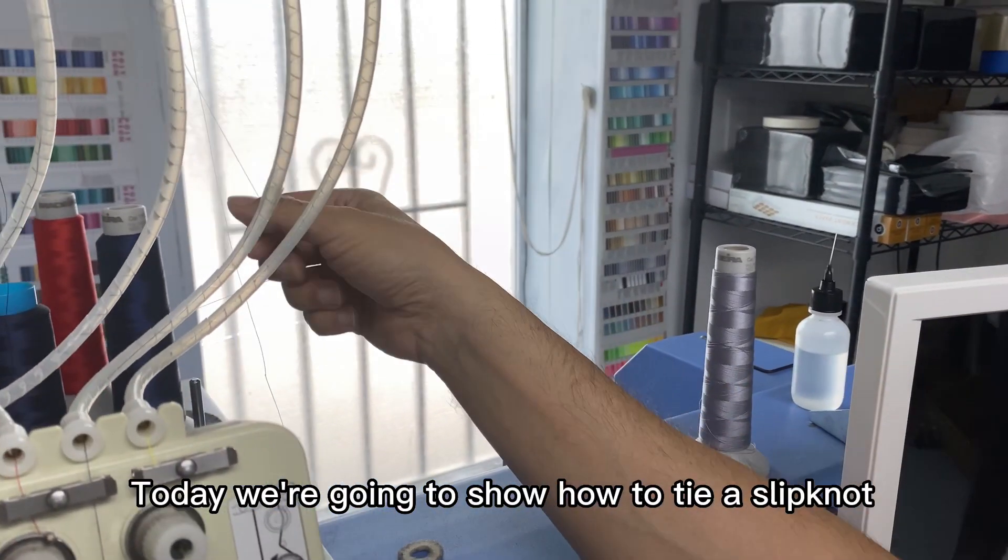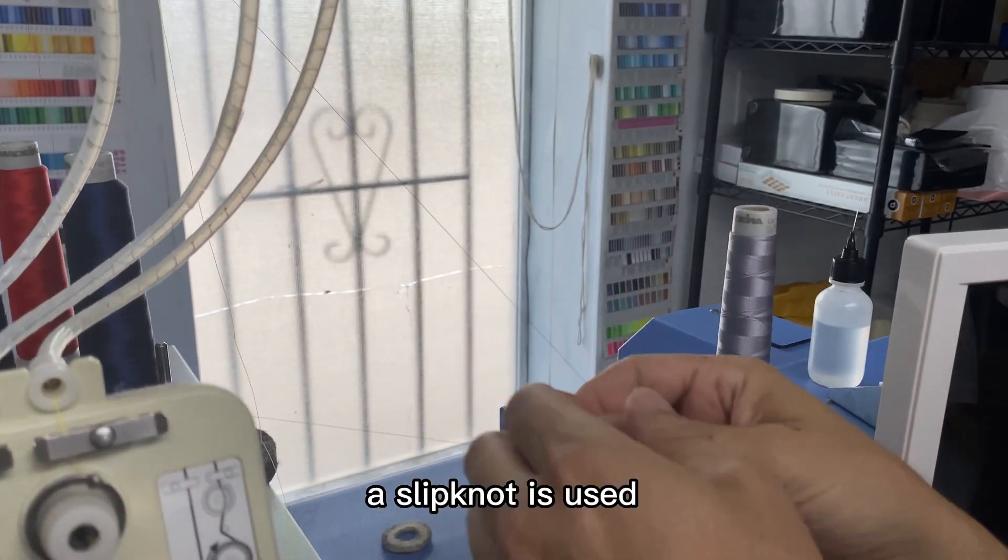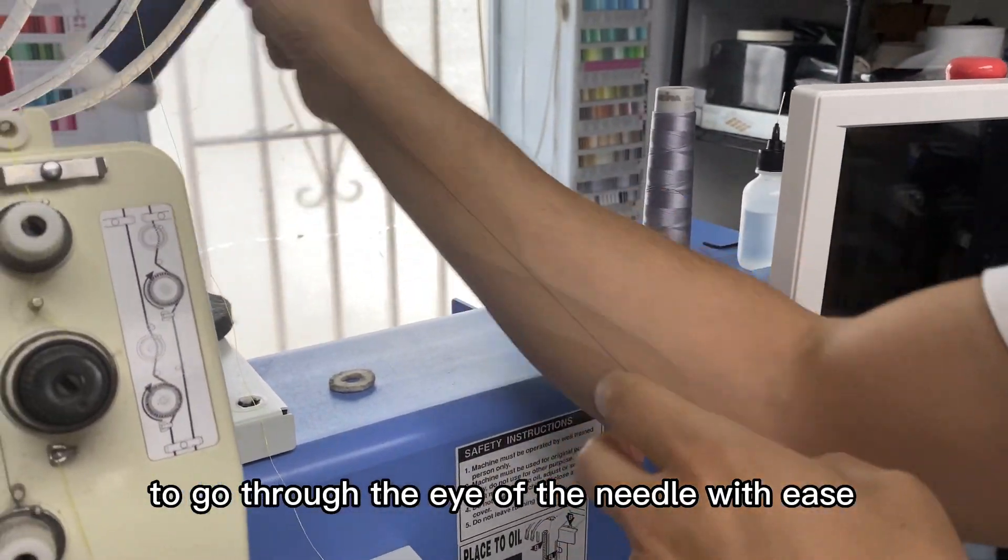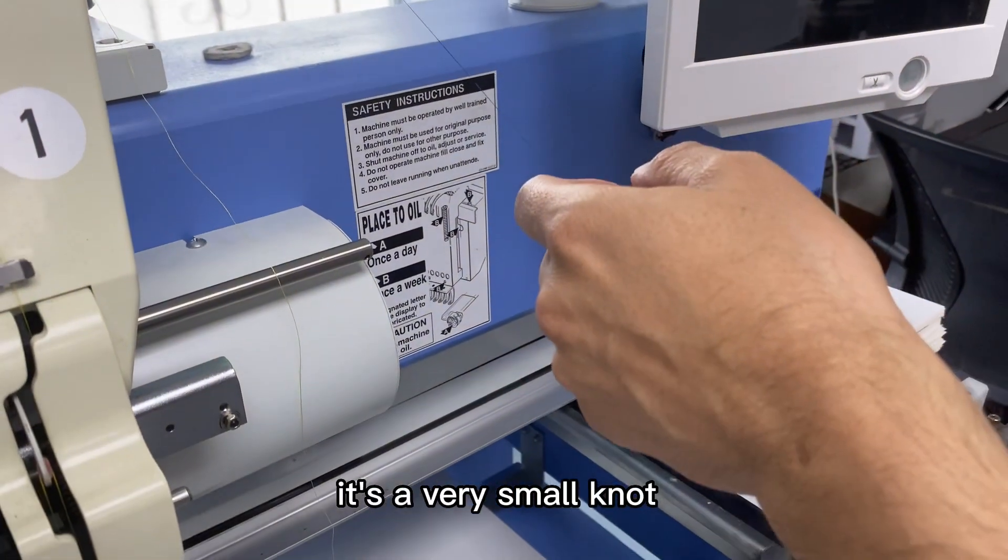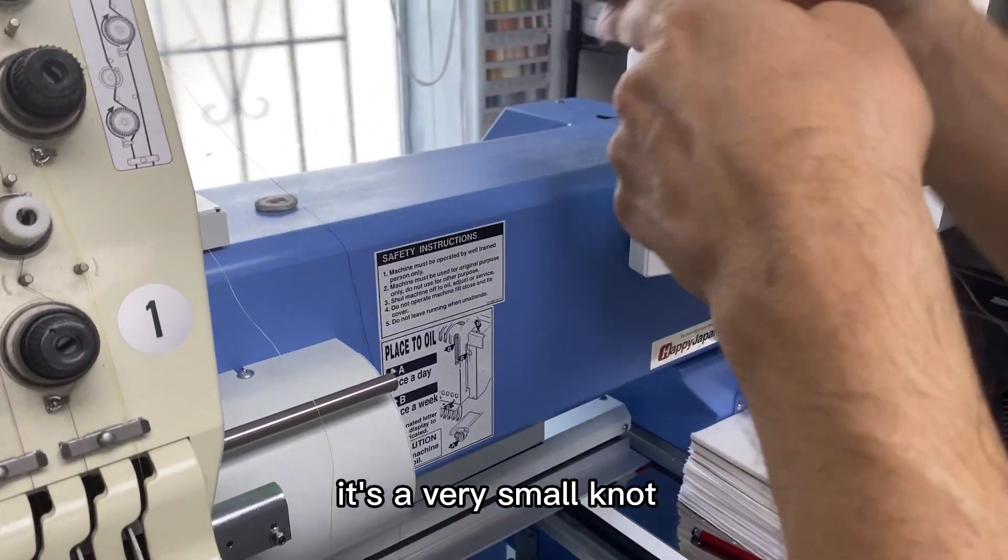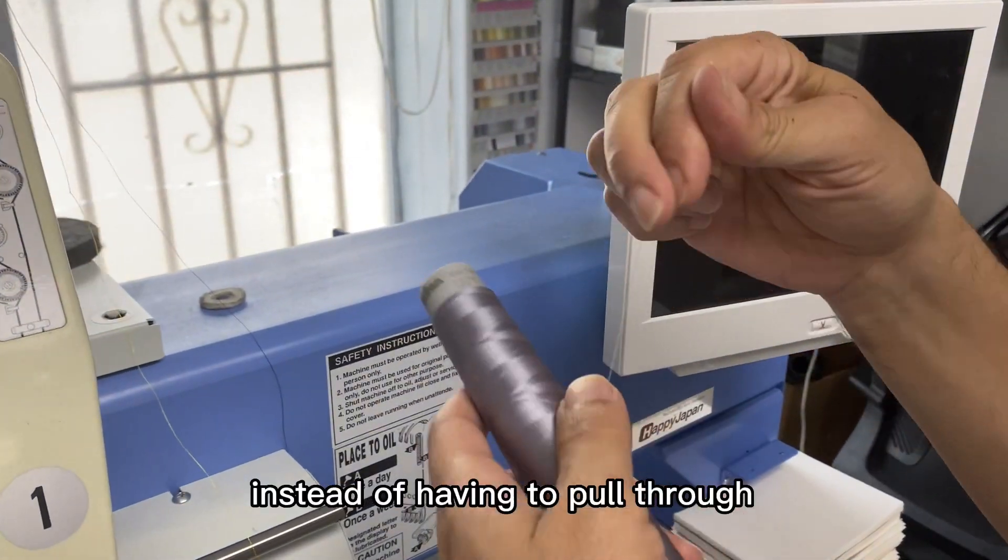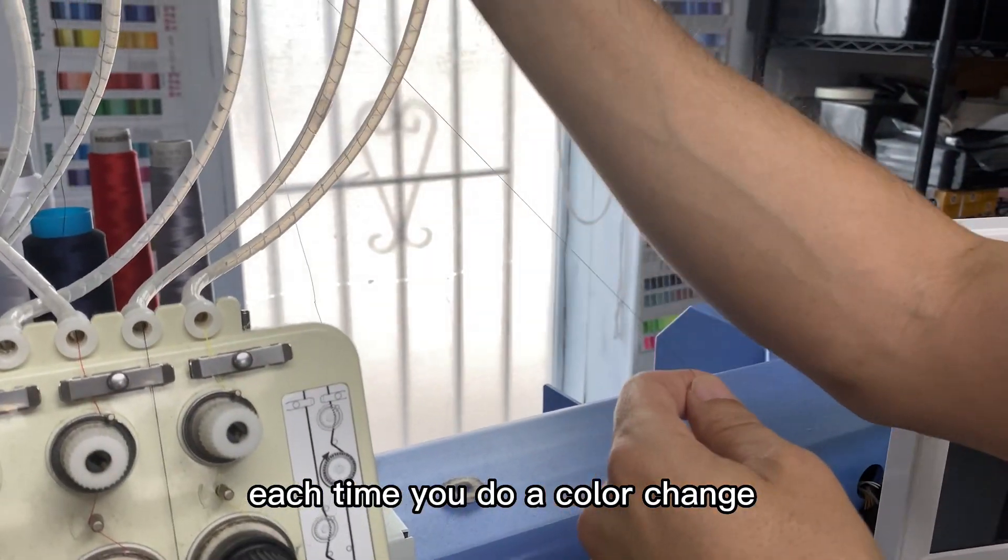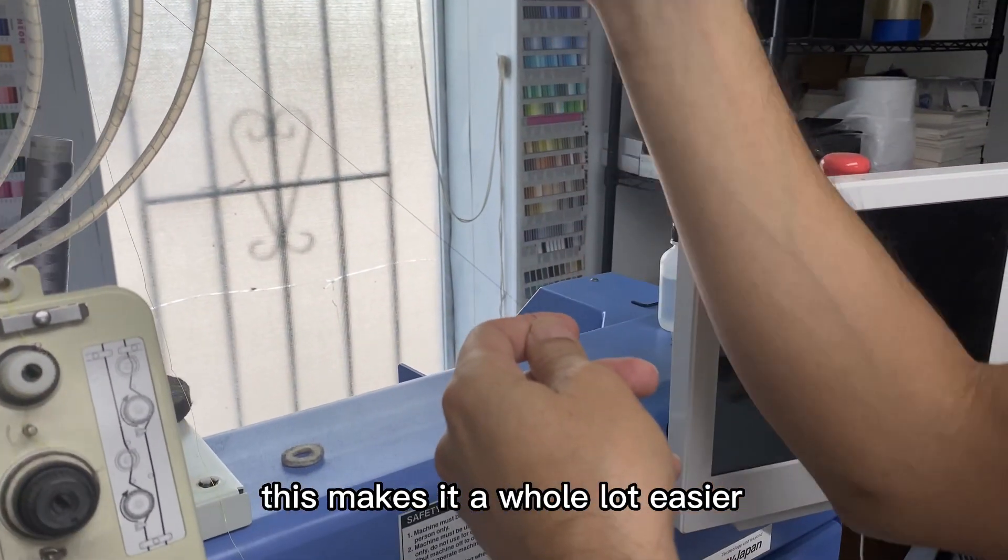Today we're going to show how to tie a slipknot. A slipknot is used to go through the eye of the needle with ease. It's a very small knot instead of having to pull through and having to re-thread the needle each time you do a color change. This makes it a whole lot easier.